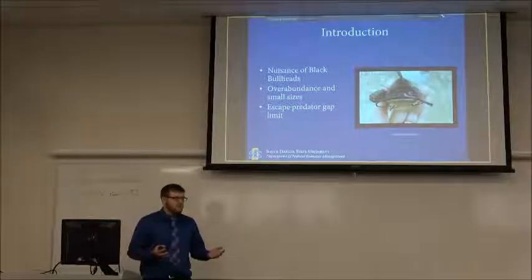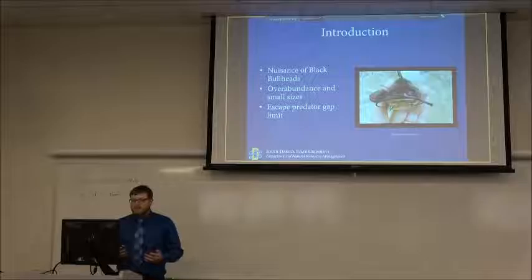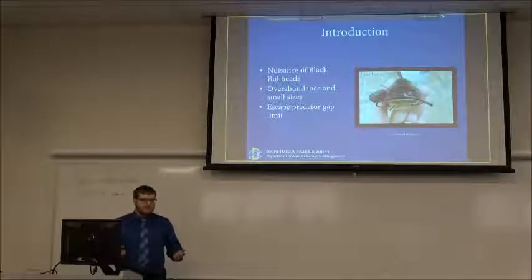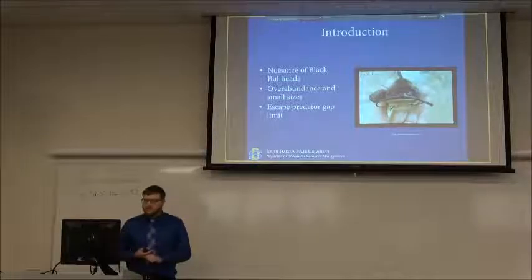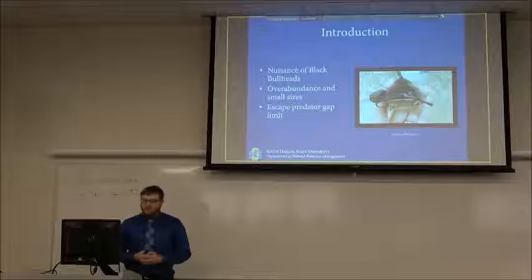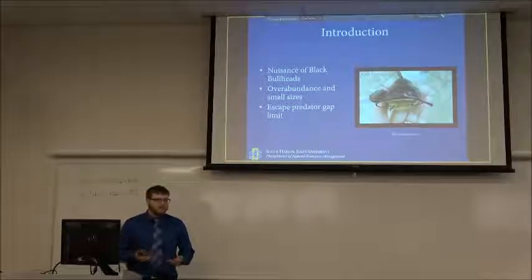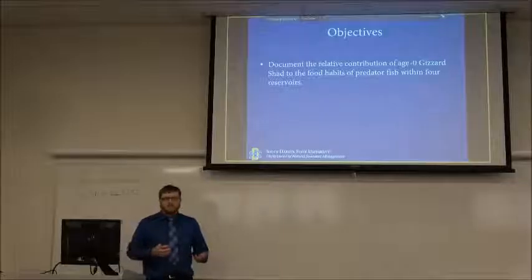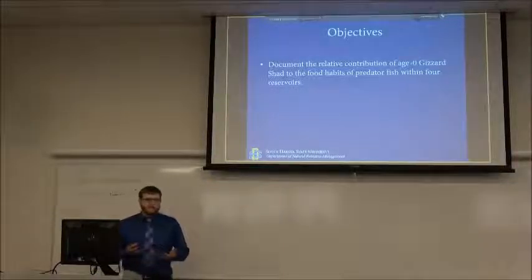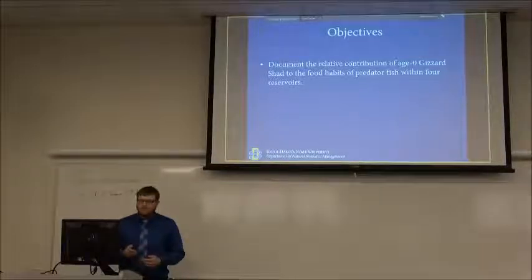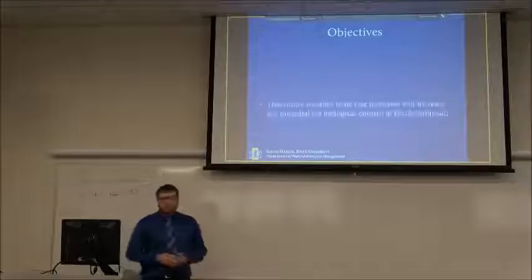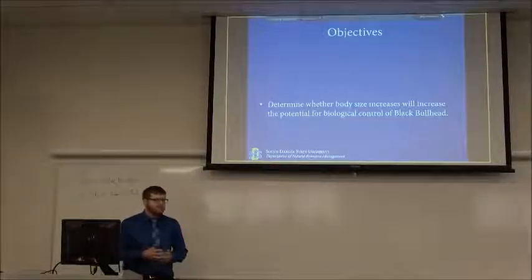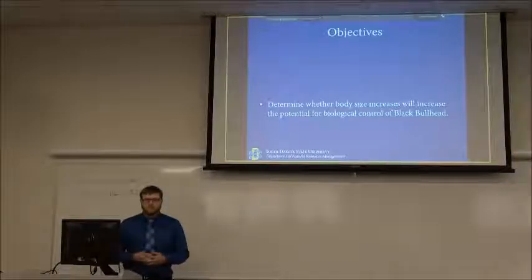Within these impoundments, a thing that causes imbalance is the nuisance of black bullheads. They're often overabundant and small in size — due to overabundance, they don't get big. The small sizes allow them to escape the gape limitations of predator species, and they're also difficult to eat because of their pectoral spines and dorsal spines, which are sharp and rigid. Objectives for my project are to document the relative contribution of age-zero Gizzard Shad to the food habits of predator species, and to determine whether predator body size can increase enough to provide a potential indirect biological control on black bullheads, hopefully reducing their abundance and increasing quality.